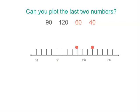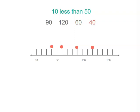Now do you want to have a go at plotting the last two numbers? Where are you going to start for 60? I started at 50, and 60 is 10 more than 50, so I moved along one space. And for 40, it's actually 10 less than 50, so I went backwards.